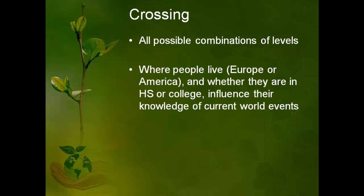So let's imagine that we are going to do a study and we are going to look at where people live — if they live in Europe or America — and whether they are in high school or college, which influences their knowledge of current world events. We can talk about whether these two independent variables are fully or partially crossed. Our first independent variable is where they live, Europe or America, and our second independent variable is whether they are in high school or college.